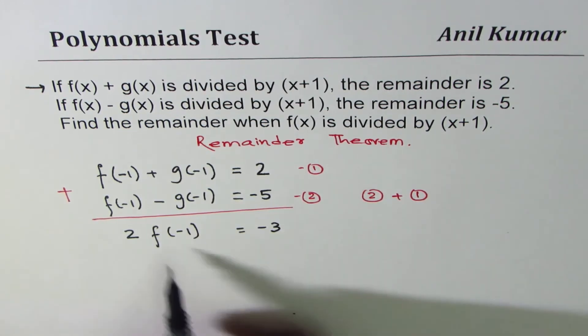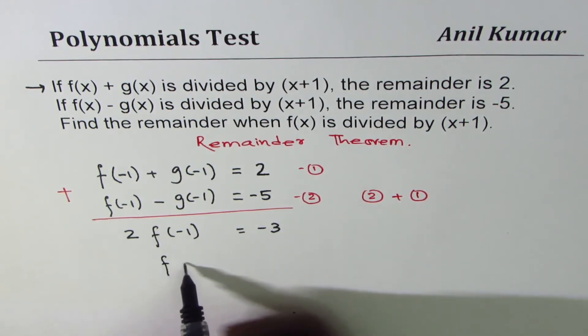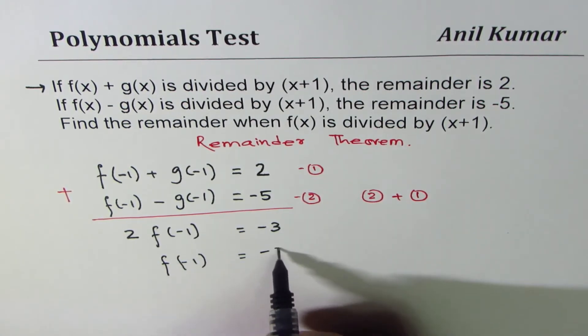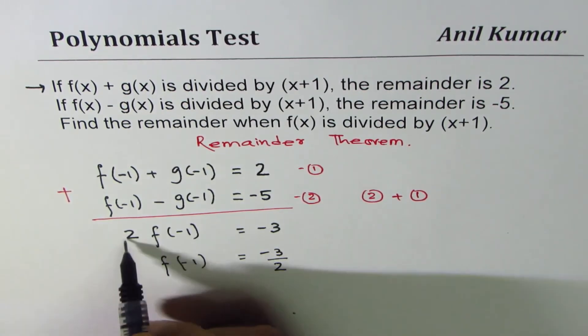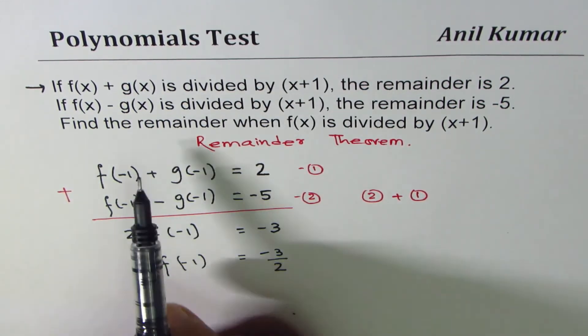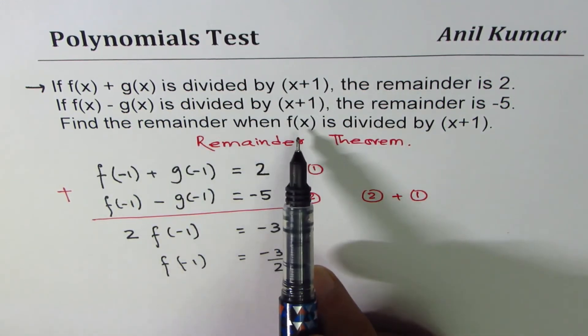What is f of minus 1? Simple algebra: f of minus 1 is minus 3 divided by 2. Now this is what you need: find the remainder when f of x is divided by x plus 1. Remainder theorem.